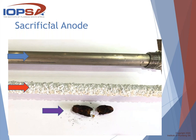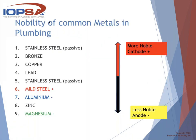Looking at the nobility of common metals in plumbing, highlighted at numbers six, seven, and nine: mild steel, aluminium, and magnesium — that's where your geyser components fall. Aluminium is closer to mild steel on the scale, which makes it a less effective anode. That's why most geysers come from the factory with a magnesium alloy sacrificial anode, but it's sometimes replaced with aluminium for certain reasons. The further apart the two metals are on the galvanic scale, the better the anode; the closer they are, the less efficient.